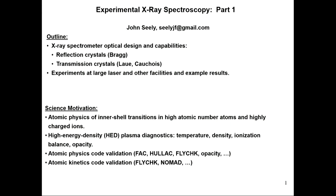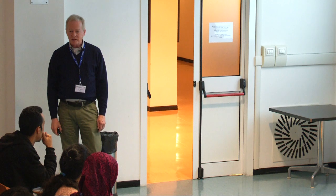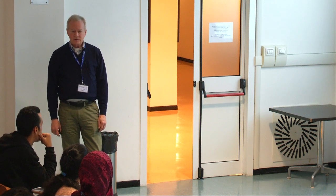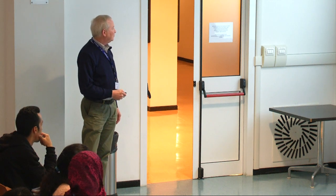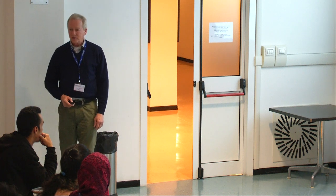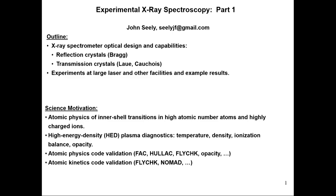What we're going to cover is experimental X-ray spectroscopy. You've been hearing mostly computational lectures, except for the very first ones on Monday by Professor Kunze. So this will be a continuation of the experimental aspects of X-ray spectroscopy. This is just a brief outline — I'll talk about spectrometers, X-ray spectrometers in particular. When you do computational simulations of spectra, you really need to know what kind of spectrometer recorded those X-ray spectra so that you can properly interpret them.